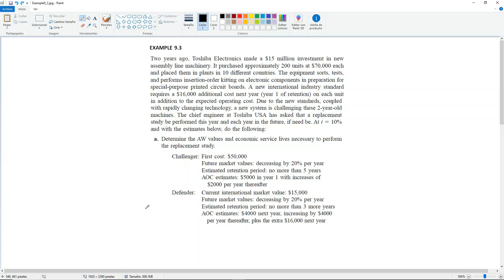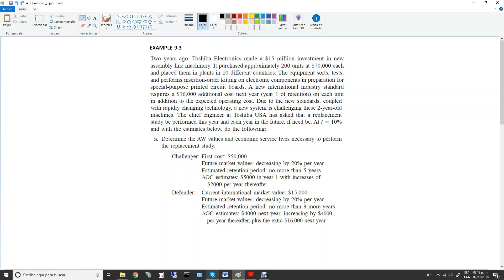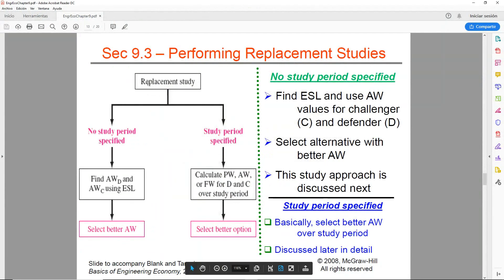At I equals 10%, and with the estimates below, do the following. Part A. Determine the annual worth values and economic service lives necessary to perform the replacement study. Part B, and then we have the challenger and the defender. So this example is a little bit long, and it has parts A, B, and C, but we're going to take it one part at a time. First of all, there's two ways to perform a replacement study.